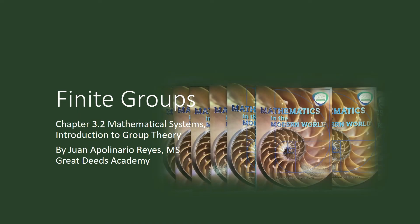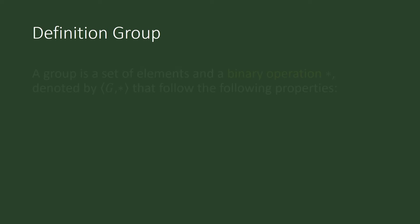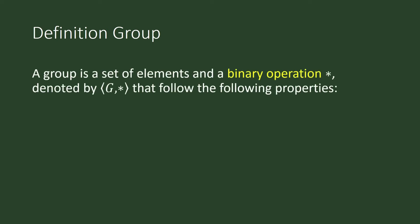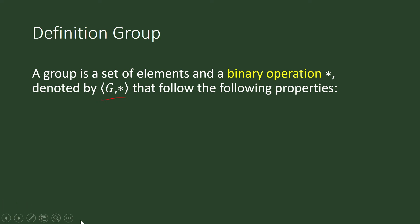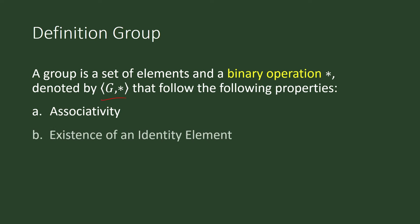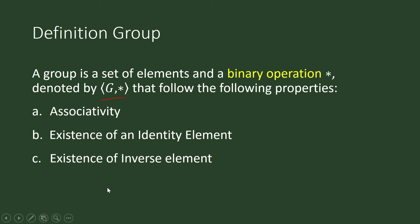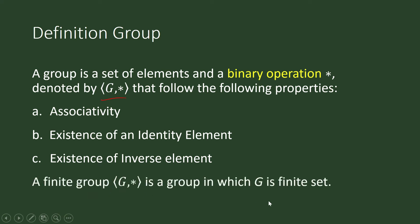In this video we will show examples of finite groups. A group is a set of elements and a binary operation that follows the following properties: associativity, the existence of an identity element, and the existence of an inverse element.